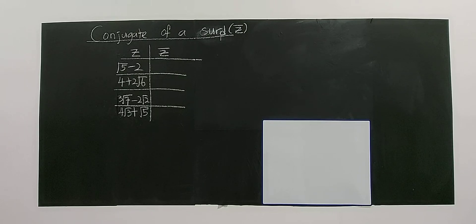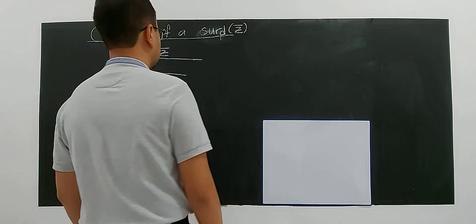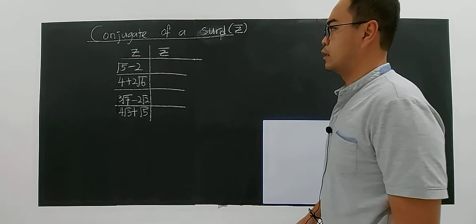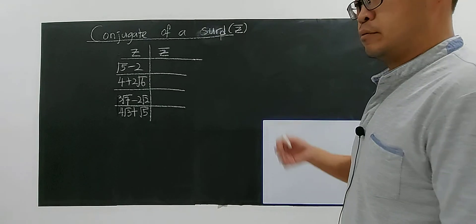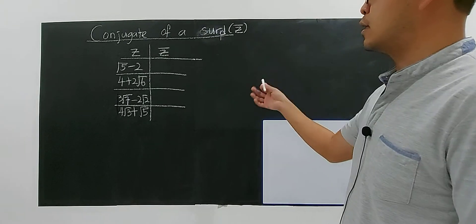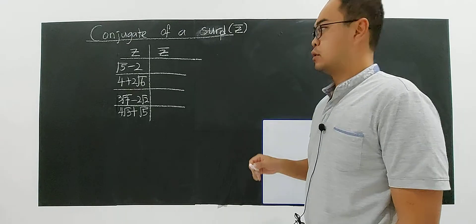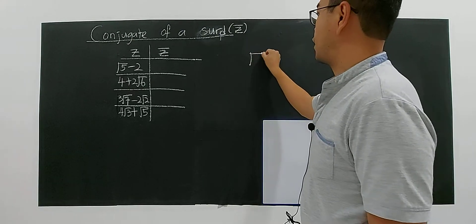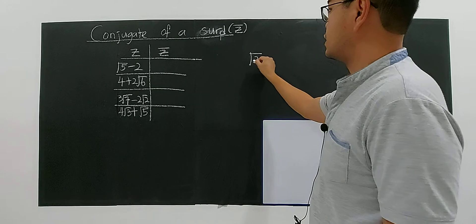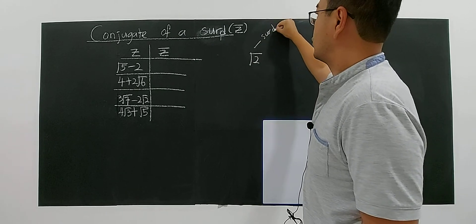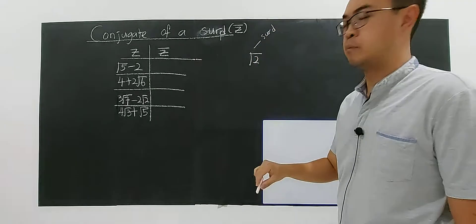We are going to explain about the conjugate of a surd. Before I talk about the conjugate of a surd, you have to know how to rationalize a surd — meaning you want to convert a surd into a rational number. For example, if I have square root of two, square root of two itself is a surd. So if you want to convert it into a rational number...